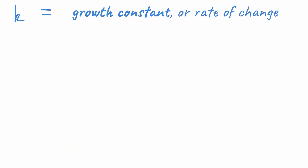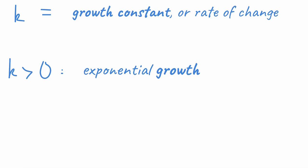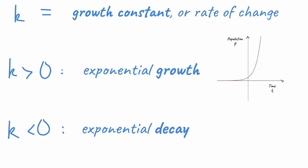We call k the growth constant or the rate of change. If k is greater than zero then we have exponential growth, so our graph of population over time is always increasing — the gradient is always positive and in fact the gradient itself is always increasing as t increases. Whereas if k is negative then we have exponential decay, so our population decreases over time and the gradient is always negative. Both of these are examples of exponential graphs.